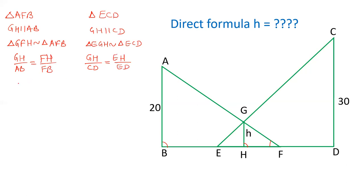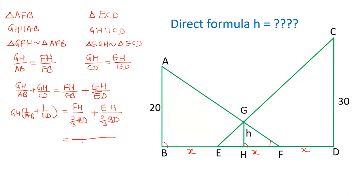Now we add them. GH upon AB plus GH upon CD equals FH upon FB plus EH upon ED. GH common, so GH times one upon AB plus one upon CD. BF is two-thirds of BD and ED is also two-thirds of BD.